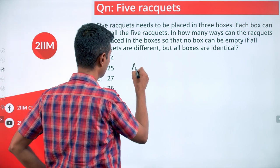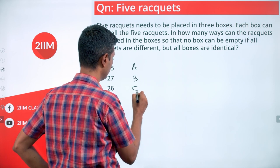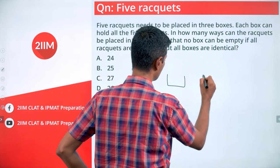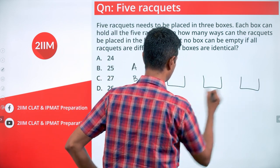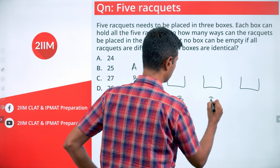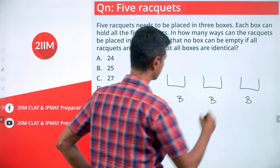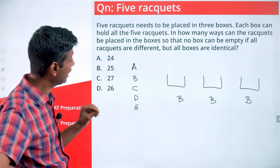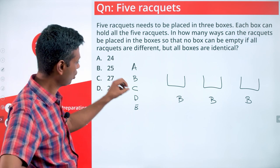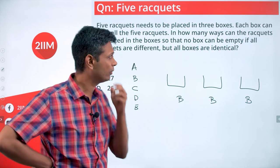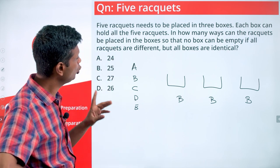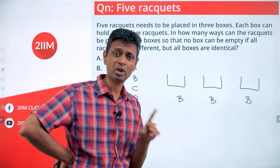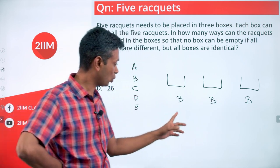The rackets are different, so I have A, B, C, D, E. The boxes are identical — box, box, box. Any box can hold all five rackets, but the question clearly says no box can be empty, meaning no zero. Each box should have at least one racket.